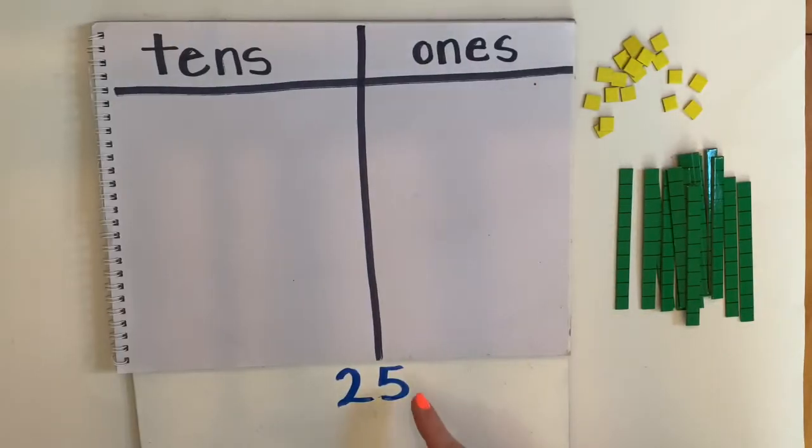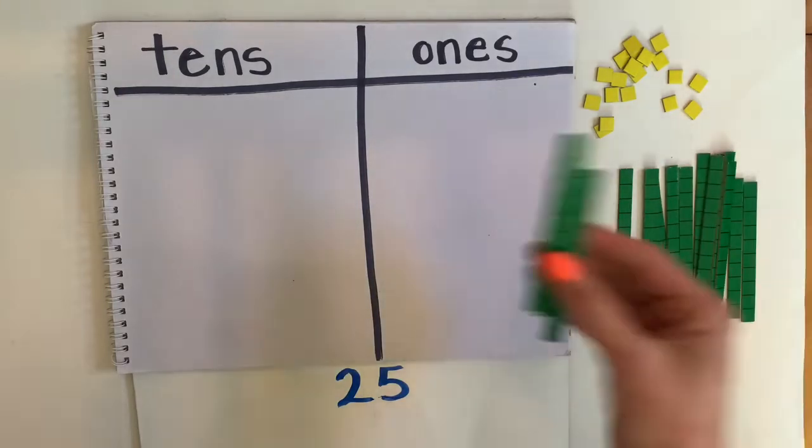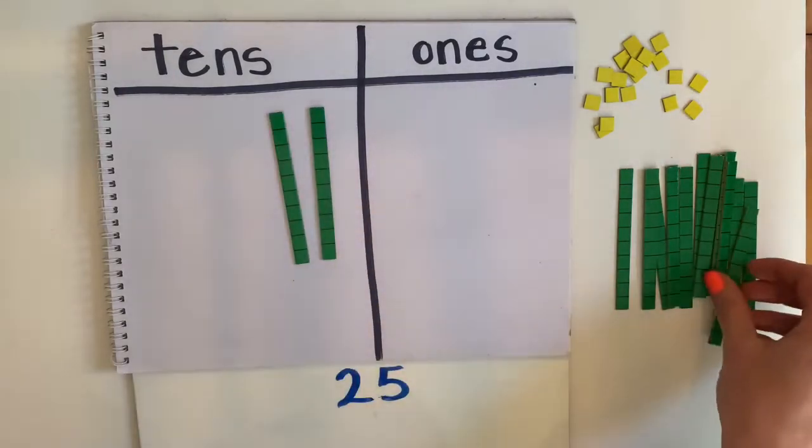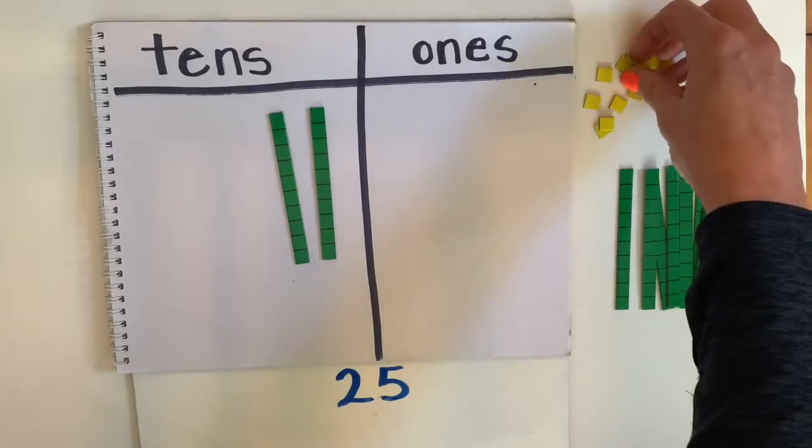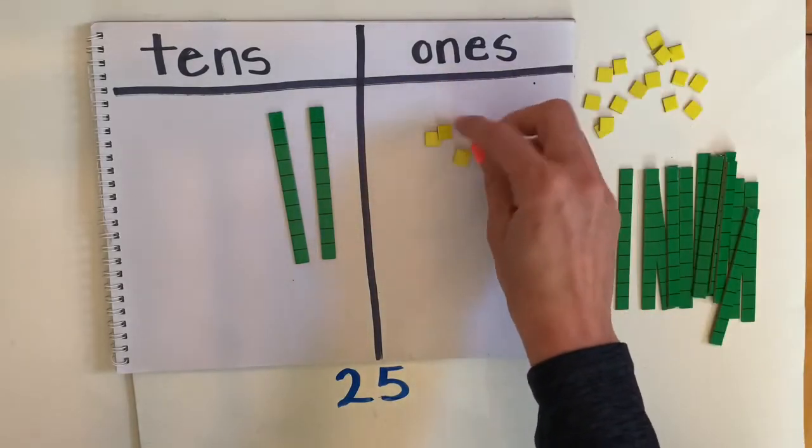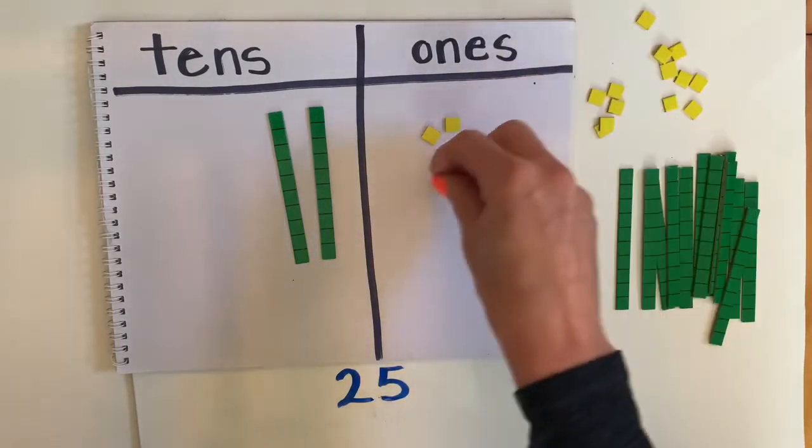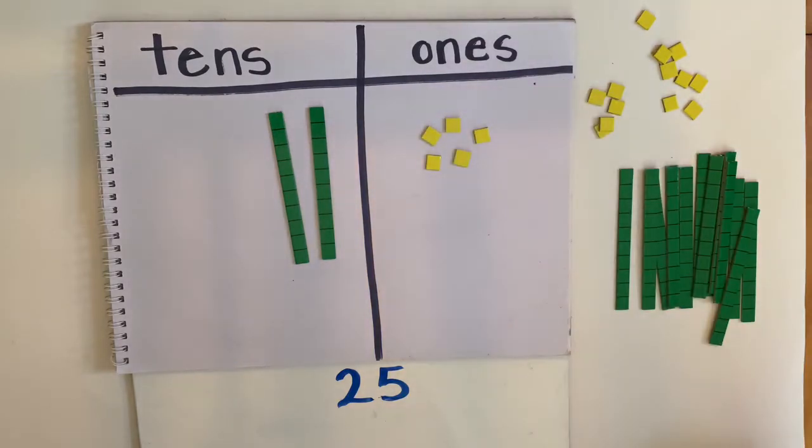Now I have 25 here. So 25 is two 10s. So my base 10 are my 10s. There's my two 10s. How many ones? Five ones. 1, 2, 3, 4, 5. That's what 25 would look like using base 10 blocks.